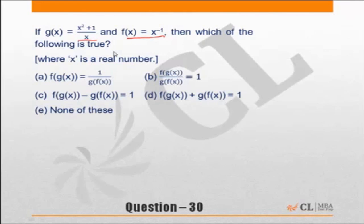Now these questions tend to confuse a lot of us, and the best way of solving this question is to take a value of x. As per the question, g(x) is given to us as x squared upon x plus 1, and f(x) is x to power minus 1, or I can say this is equal to 1 by x.